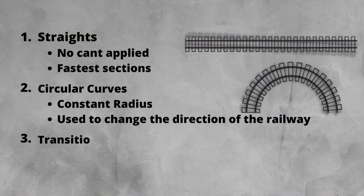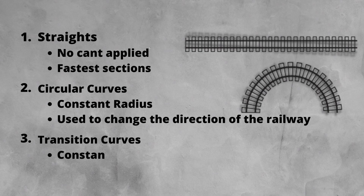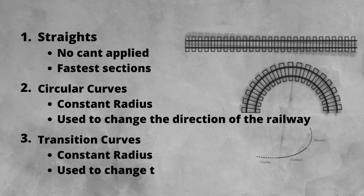Lastly we have transition curves. Transitions are in reality a spiral — they have a constantly changing radius. Transitions and their use is important for the comfort and safety of passengers.